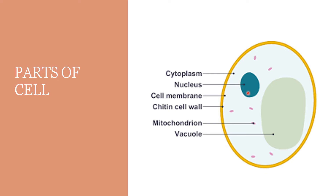Nucleus — it contains thread-like structures called chromosomes, which carry genes and help in inheritance, or the transfer of characters from parents to offspring. The nucleus is the control center of all activities of the cell.